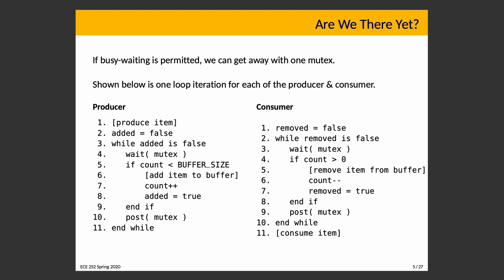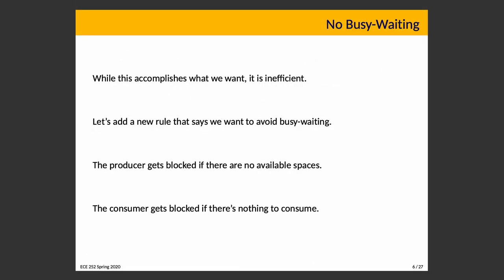We want a non-busy-waiting solution because wasting CPU time is inefficient. The behavior we actually want is: the producer gets blocked if there are no available spaces, and the consumer gets blocked if there is nothing to consume. How do we go about that?